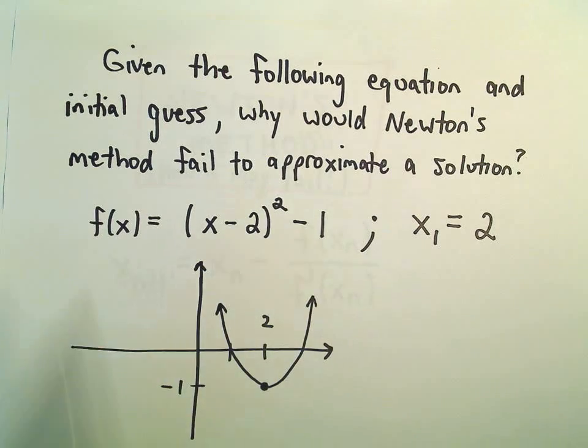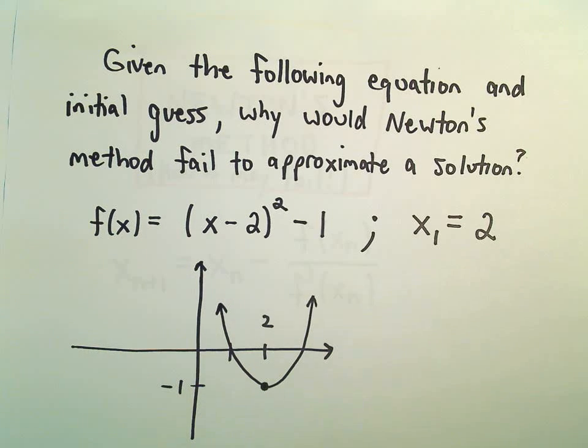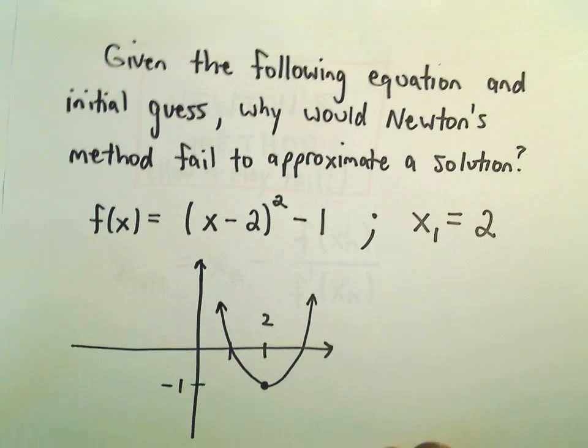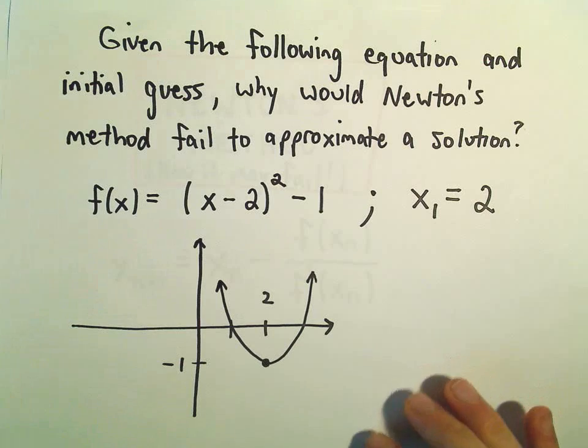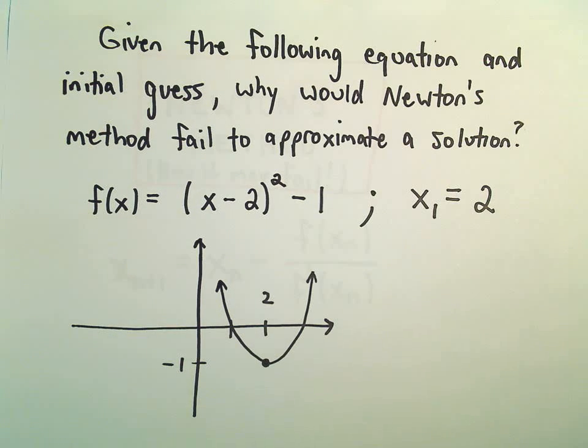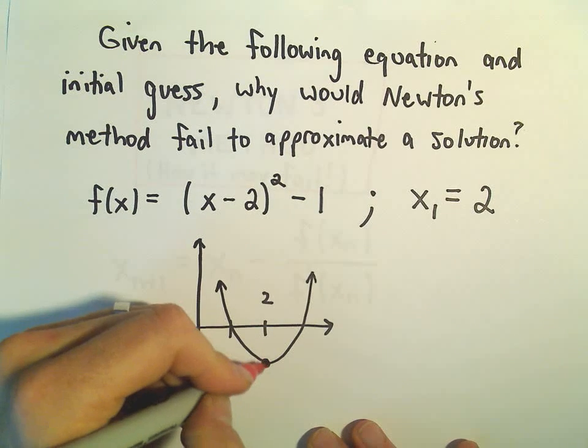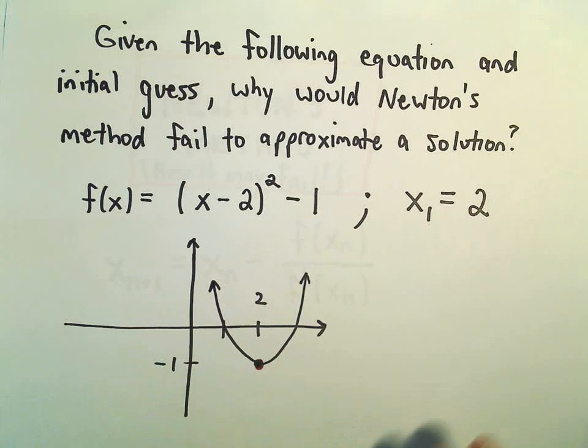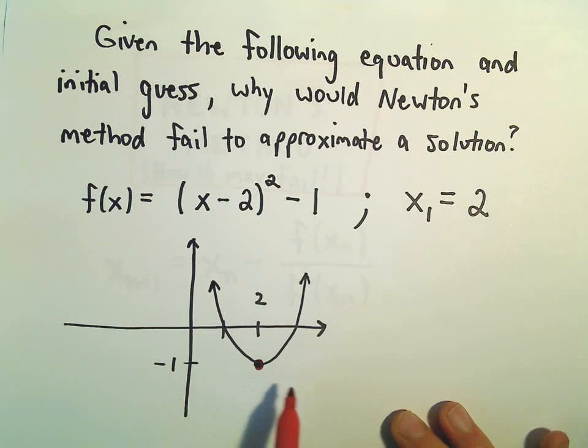But suppose, just talking about geometrically why it can go wrong. What Newton's method does is, when you start at your first guess, it looks at a tangent line at that point. And hopefully you pick a point where the tangent line will eventually hit the x-axis.